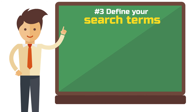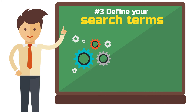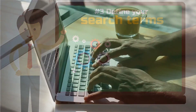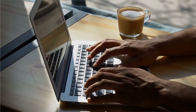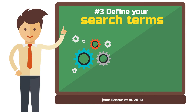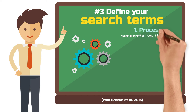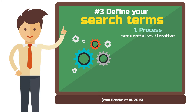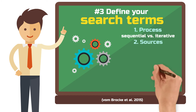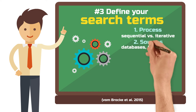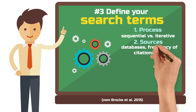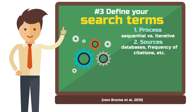Step 3: Define your search terms. Now we really come to the systematic part. Here you have endless possibilities for how you can structure your literature search. To simplify things a bit, von Brocke and colleagues define four dimensions. The process: depending on the objective, it can either be sequential, meaning in one go, or iterative, meaning in multiple phases at different times. Sources: this includes the databases you select for your search or other metrics such as the frequency of citations. The simplest option is to use the most important databases in your field and argue that they all cover the literature about your topic well.